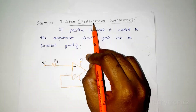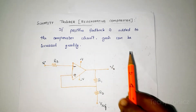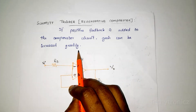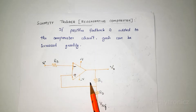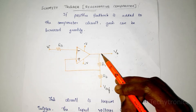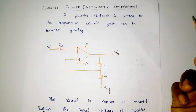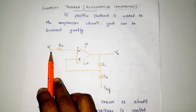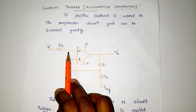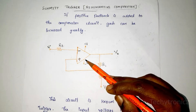If you are adding a positive feedback to the comparator circuit, the gain can be increased greatly. This is the circuit diagram of Schmitt Trigger. Here we are applying the input voltage to the inverting terminal. This is the feedback network given from the output to the non-inverting terminal. The input VA is applied to the inverting terminal, so we can say this is inverting Schmitt Trigger, and the feedback voltage is applied to the non-inverting terminal.